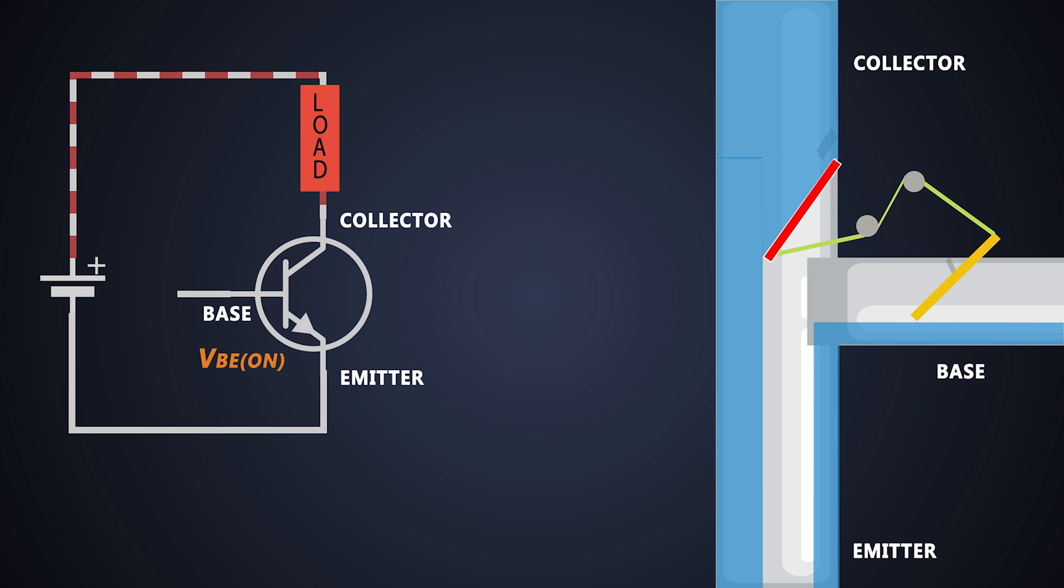Just like that, if we apply base to emitter voltage to the transistor, current flows through the collector to emitter of the transistor. This is also true that a small voltage as low as 0.7 volts and current of 1 milliamp is sufficient to turn on the transistor.